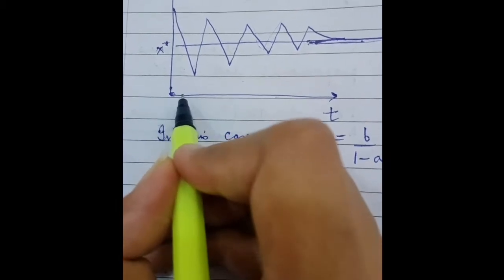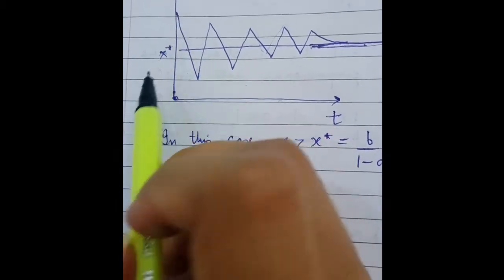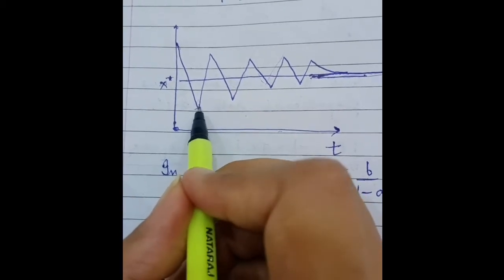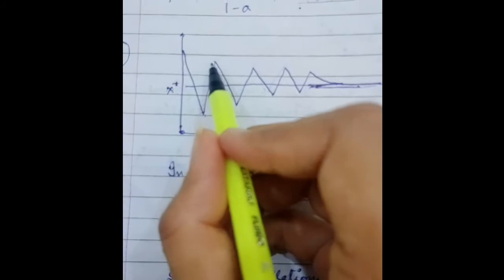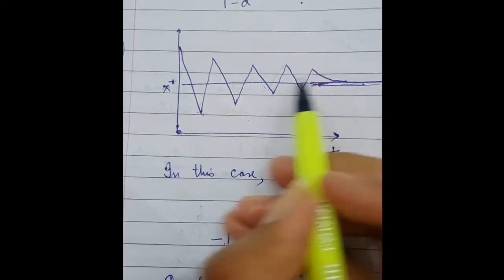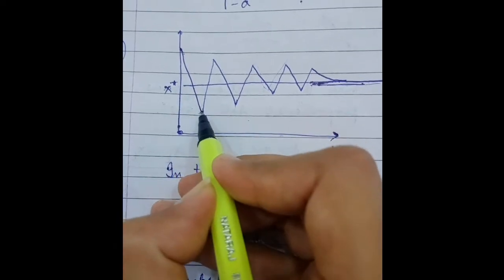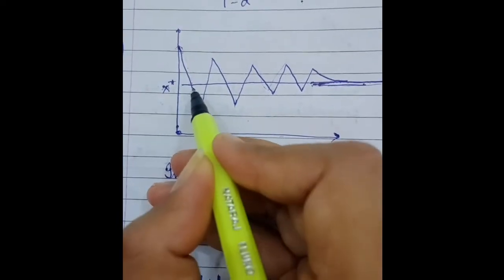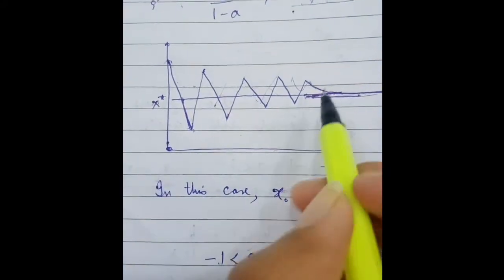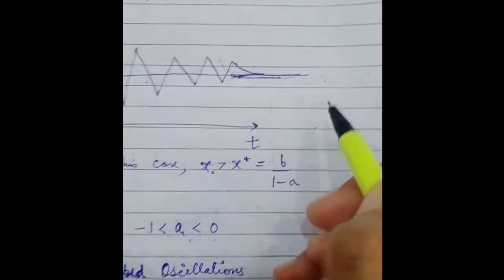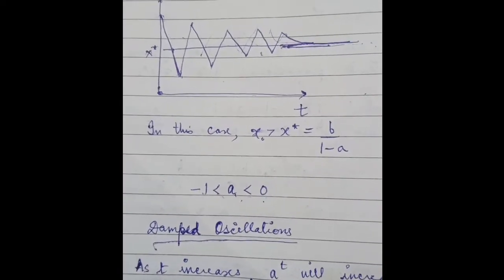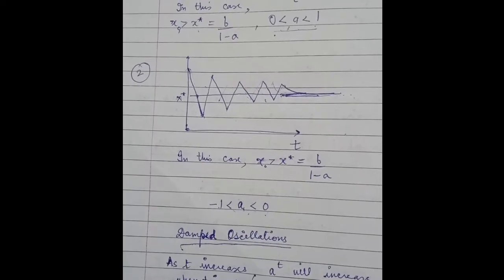Suppose the first t value is even — the term is positive. The next t is odd — it becomes negative. Then positive, negative, positive, negative and so on. The amount by which it changes also decreases with each step, and ultimately it reaches the point of equilibrium. This particular case when a is between 0 and minus 1 is called the case of damped oscillation.